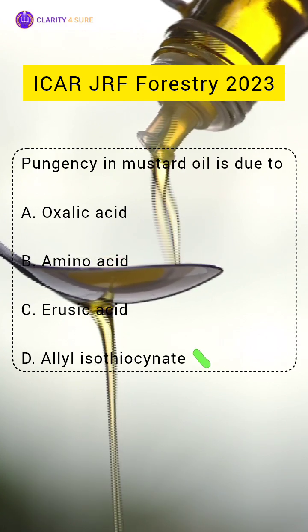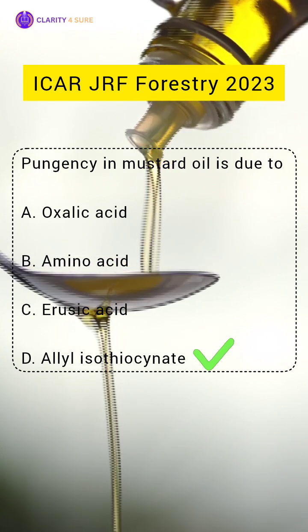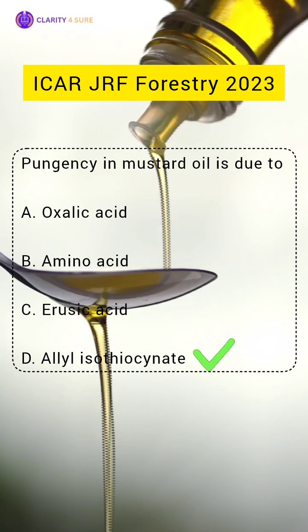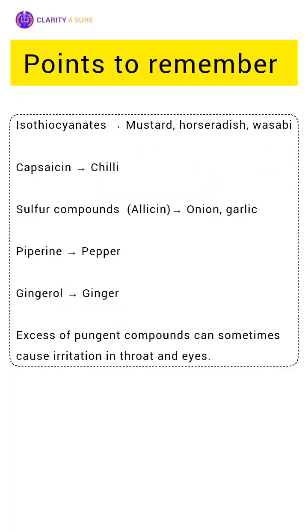Option D — allyl isothiocyanate. Have you ever wondered why some crops taste sharp, hot, or pungent? Pungency in plants is due to different special compounds. In mustard and other cruciferous crops, it is due to allyl isothiocyanate, formed from glucosinolates like sinigrin by the enzyme myrosinase.